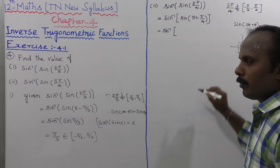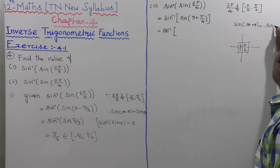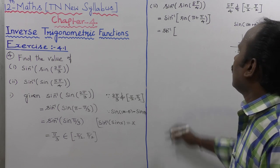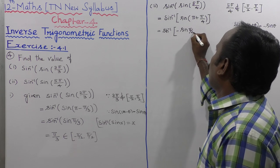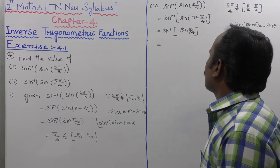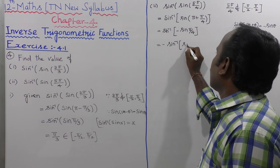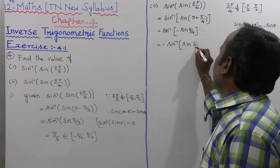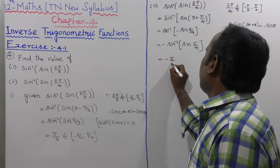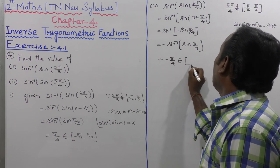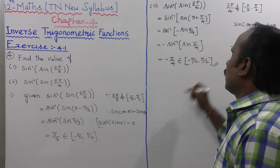In the third quadrant, sin(π + π/4) = -sin(π/4). So sin⁻¹(sin(5π/4)) = sin⁻¹(-sin(π/4)) = -π/4, since -π/4 belongs to the closed interval [-π/2, π/2]. Therefore the answer to the second part is -π/4.